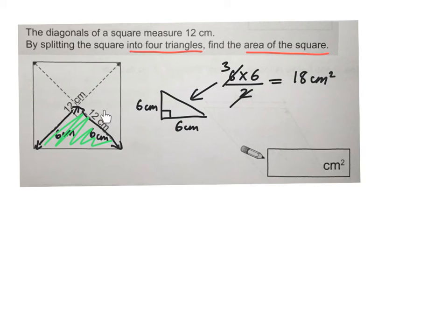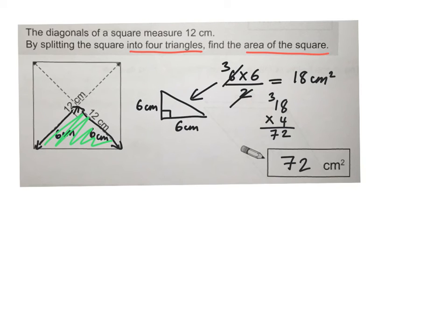18 centimetres squared is the area of one triangle. But how many triangles do I have in total? There are four triangles, so I need to multiply this by 4. 18 times 4: 4 times 8 is 32, put the 2, carry the 3; 4 times 1 is 4, plus 3 is 7. My answer is 72 centimetres squared, which is the area of the entire square.